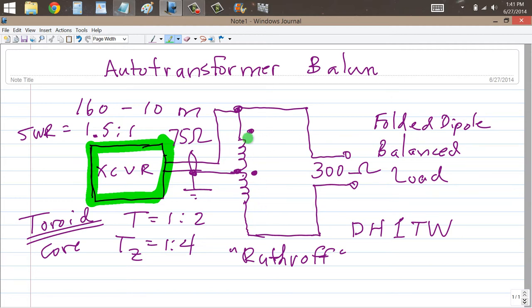The important thing, once again, to remember is that the output impedance, Z sub out on this end, is going to equal 4 times the input impedance, that is to say the impedance that the radio sees.